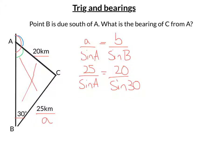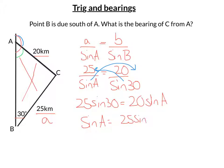So we need to get sine A on its own and at the top. So the first thing we're going to do is cross-multiply. So we're going to move that up there and the sine 30 onto the other side. So we're going to get 25 sine 30 is equal to 20 sine A. And then to get sine A on its own, I'm going to divide both sides by 20. So we're going to get sine A is equal to 25 sine 30 over 20.